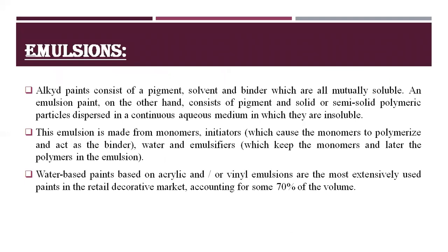Alkyd paints consist of a pigment, solvent, and binder which are all mutually soluble. An emulsion paint, by contrast, consists of pigment and solid or semi-solid polymeric particles dispersed in a continuous aqueous medium in which they are insoluble. This emulsion is made from monomers, initiators which cause the monomers to polymerize and act as binders, water, and emulsifiers which keep the monomers and later the polymers in the emulsion. Water-based paints based on acrylic and vinyl emulsions are the most extensively used paints in the decorative market, accounting for some 70% of the volume.